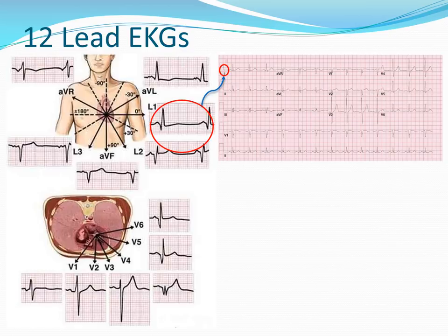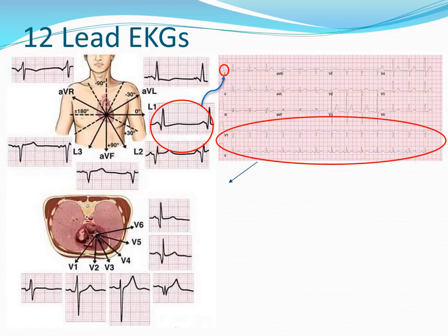You can see where lead 1 shows up on the 12-lead EKG printout. See if you can find leads 2, 3, AVF, AVL, and V1 through V6. Along the bottom, they've taken the lead 2 tracing and the V1 tracing and shown a longer 10-second strip. This is because the little snippets of each of the 12 leads above are only 2.5 seconds long, so we can't get a good idea of the rhythm. These longer 10-second strips at the bottom help us see if there are any issues with the rhythm.